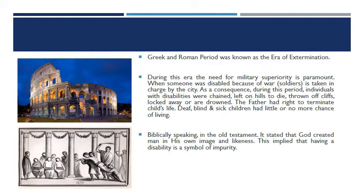Why did it become an era of extermination? Because disability during this period was viewed as a punishment of the gods — a bad omen. They believed an individual is what he is now and forever: he cannot be changed or cured. Greek philosophers like Plato and Aristotle called for infanticide, meaning that whenever an infant was born with disabilities, he or she was not considered worthy to live. Philosopher Cicero called for the purity of the race — a society free of defectives.